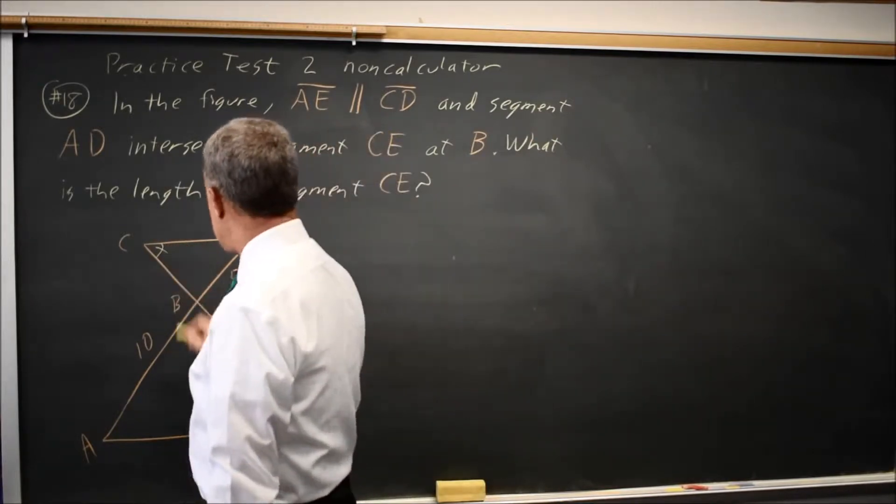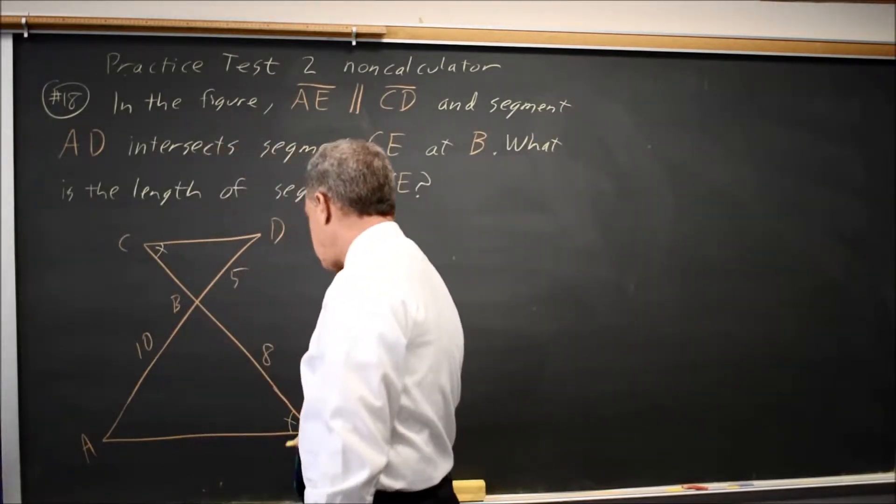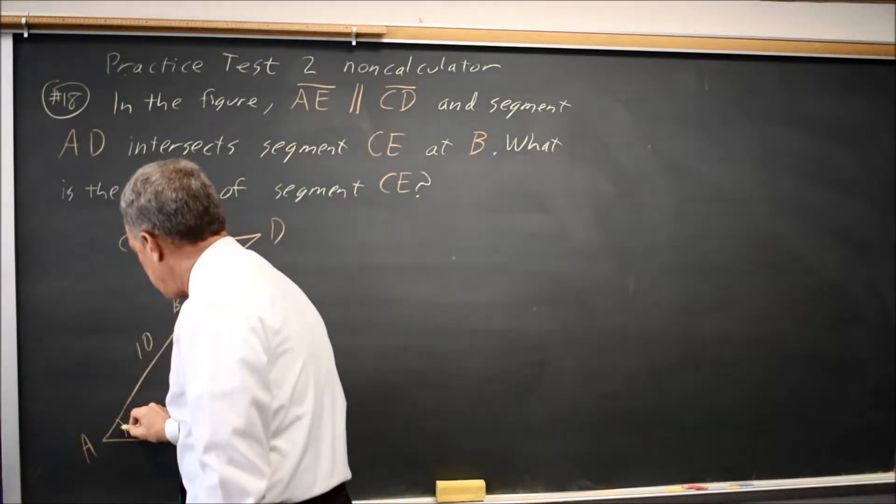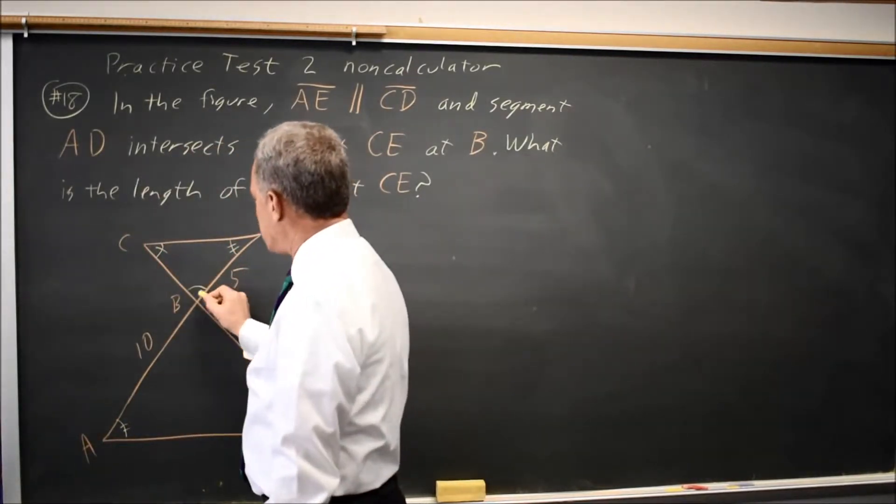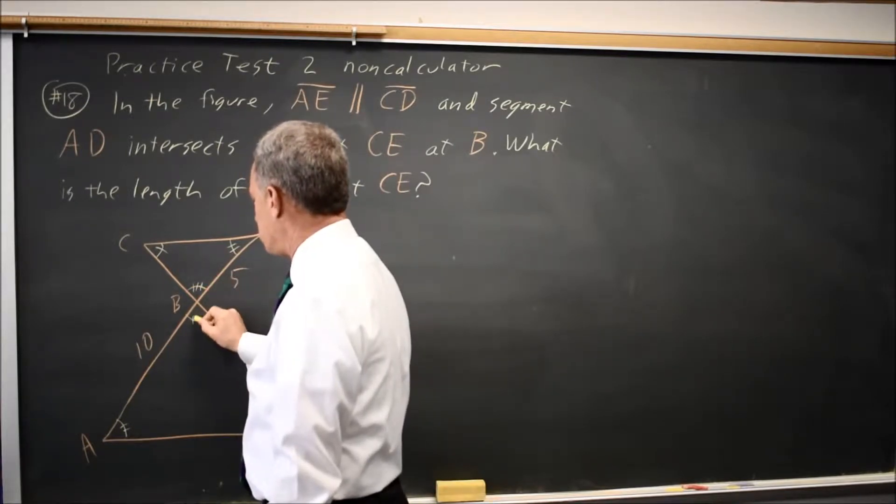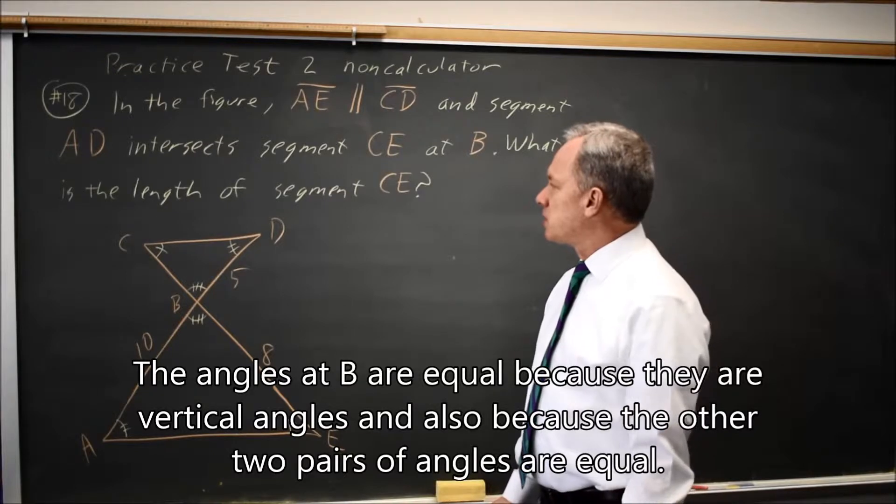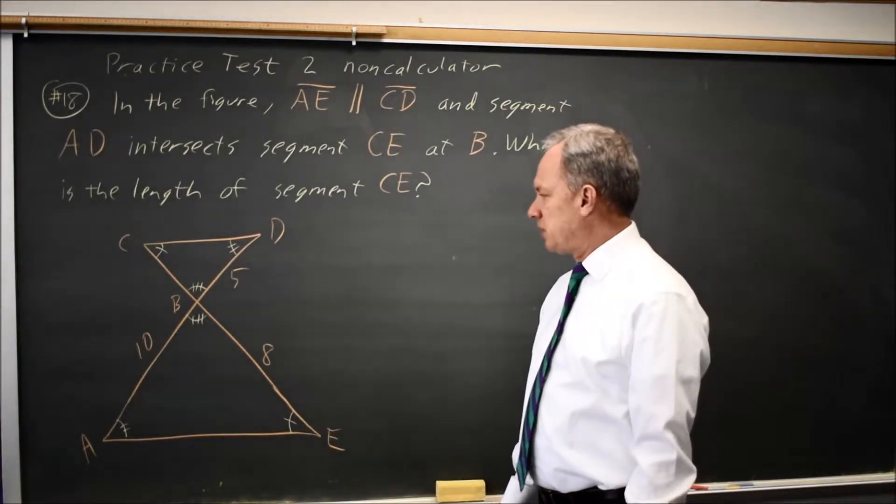which means this angle and this angle are equal, and this angle and this angle are equal, and of course these two are also equal, so we have similar triangles. And they provide us with some of the lengths, and their question is what is the length of CE?